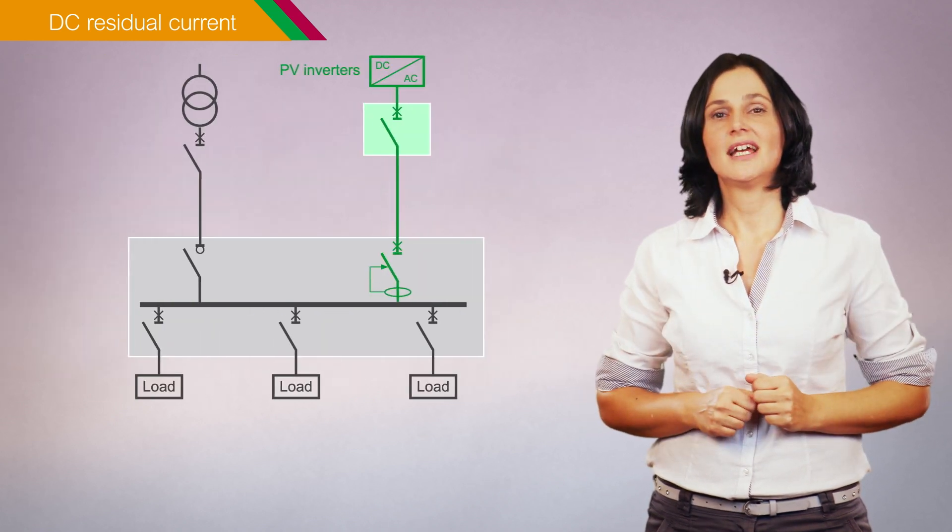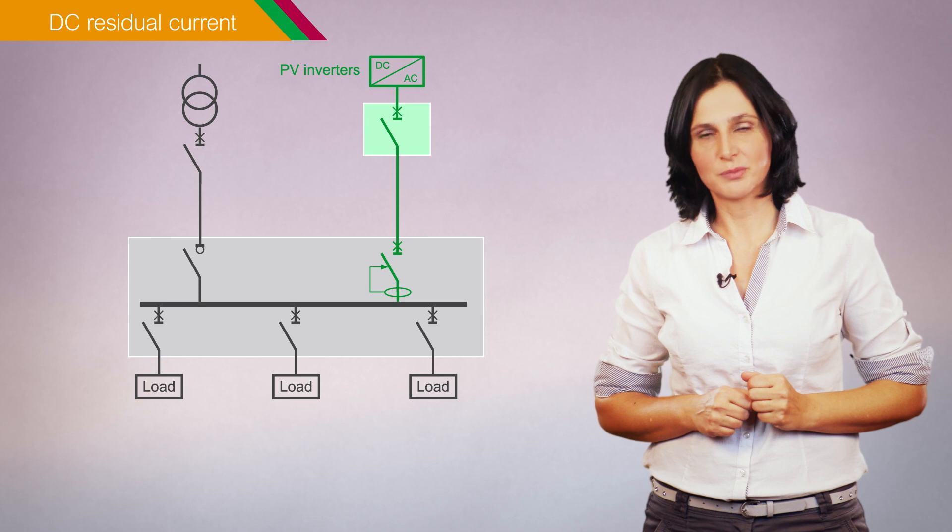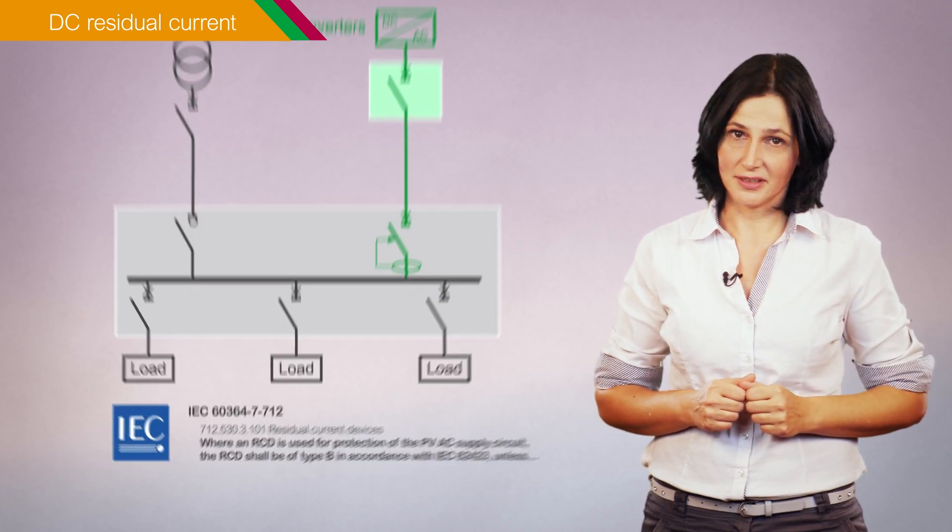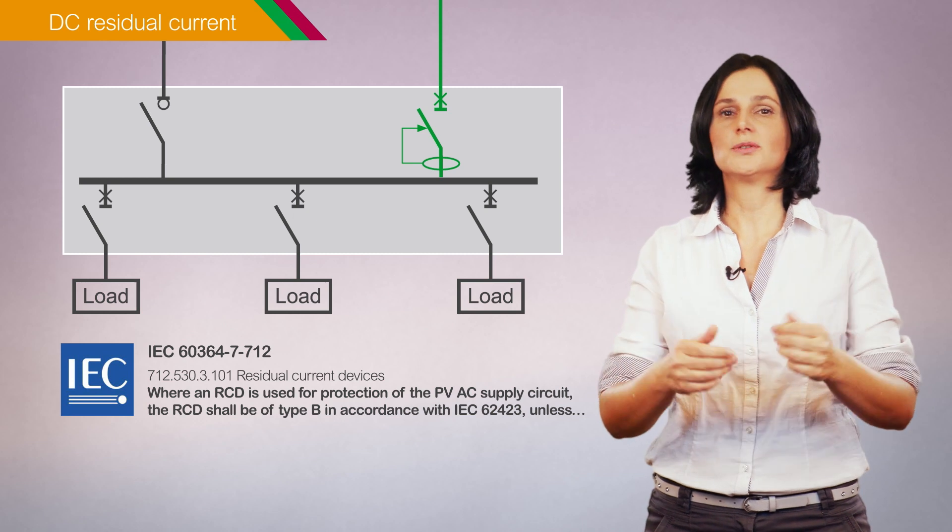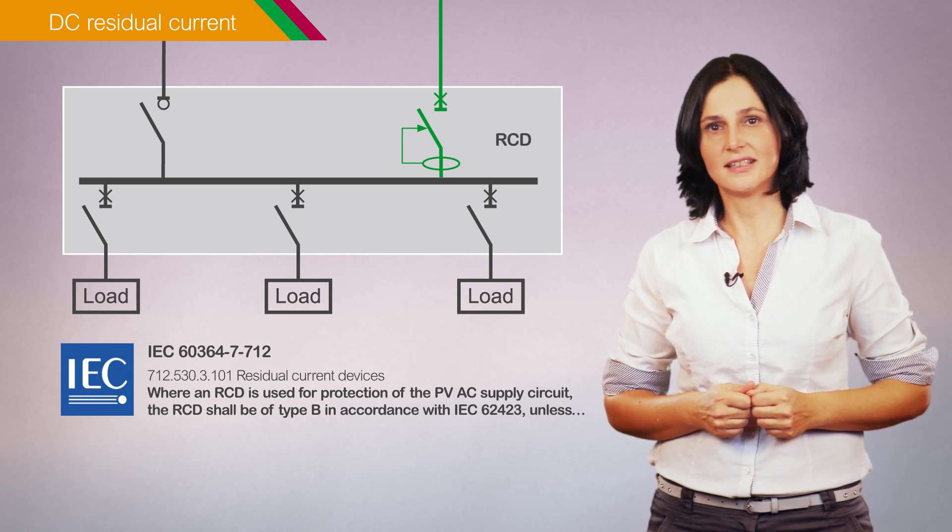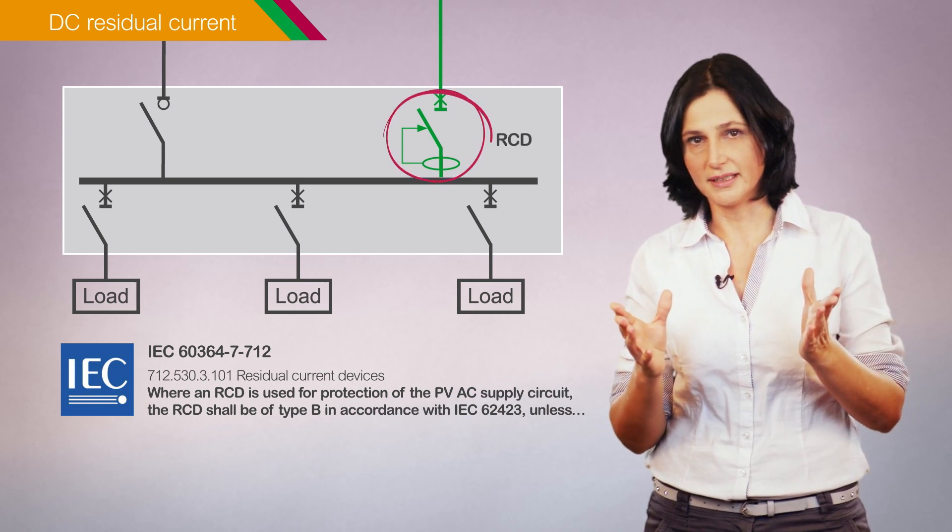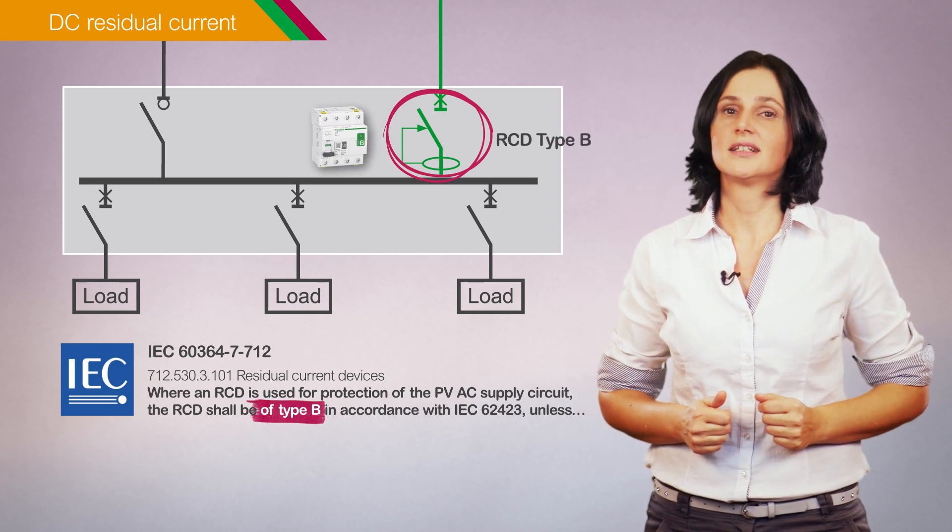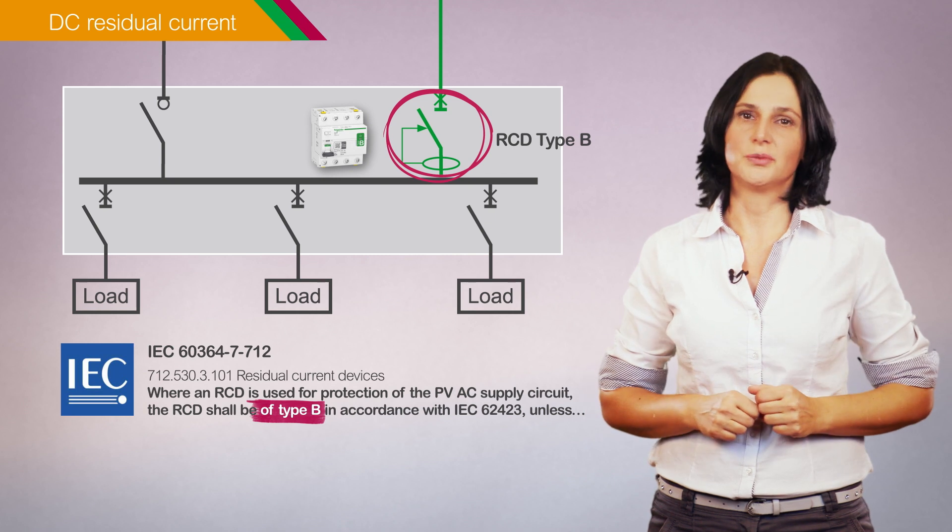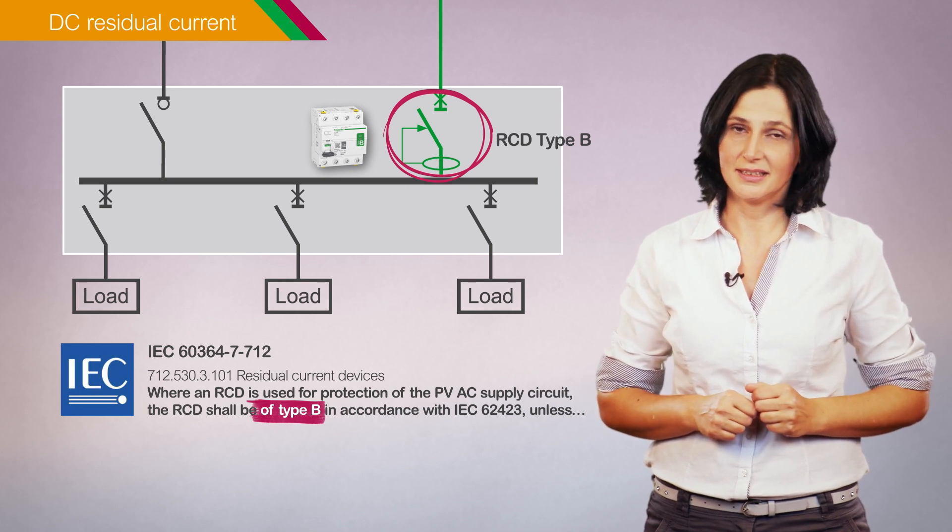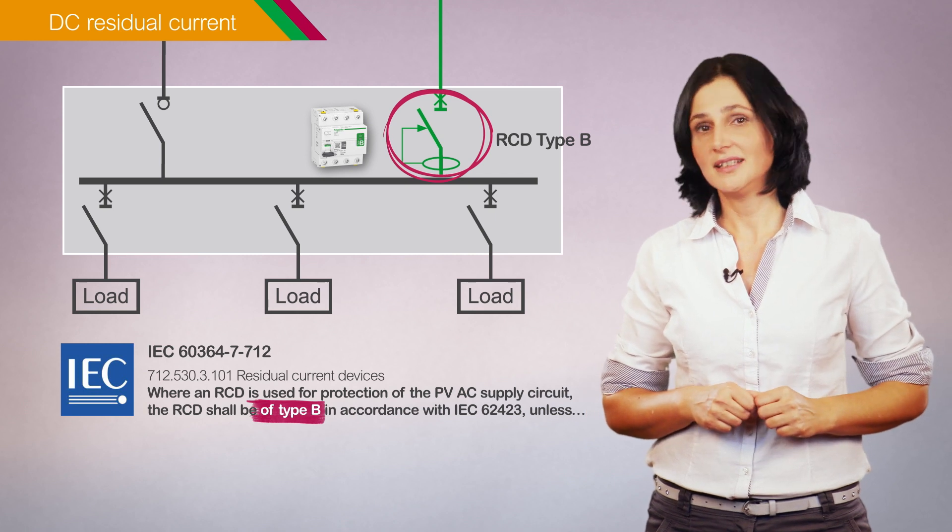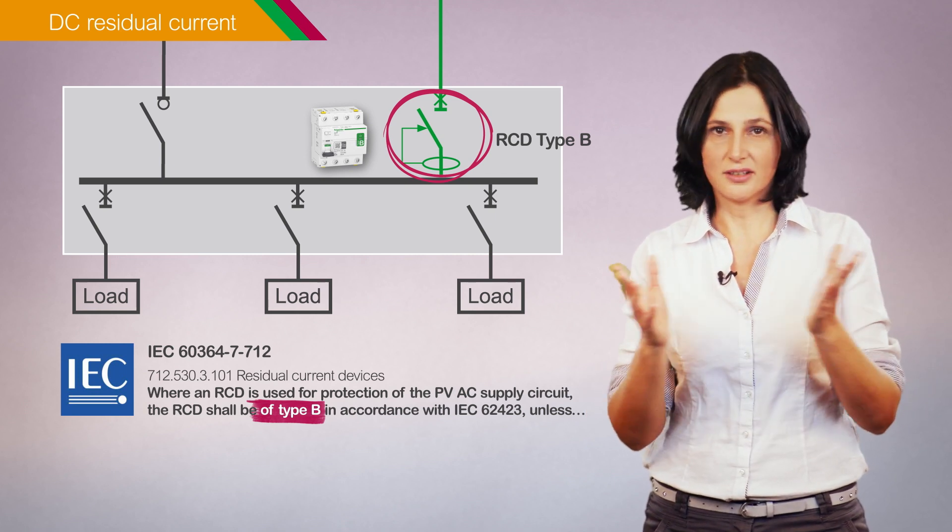DC residual current has an impact on the choice of protection equipment. In particular, as stated by international standards, residual current devices installed on the AC side of the photovoltaic system must be type B, unless there is isolation between AC side and DC side or inverter manufacturer's instructions indicate that type B are not required.